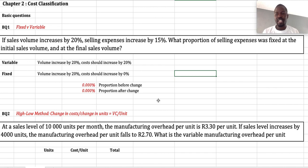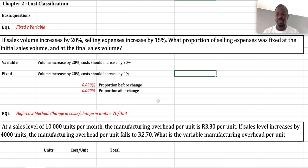We are going to do cost classification. We've got question BQ1, fixed versus variable. Let's read the scenario. If the sales volume increases by 20%, selling expenses increase by 15%. What proportion of selling expenses was fixed at the initial sales volume and at the final sales volume?